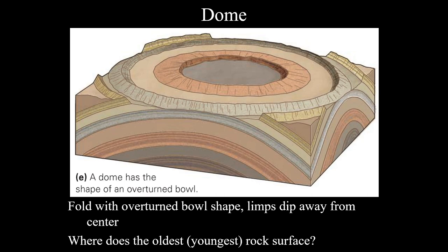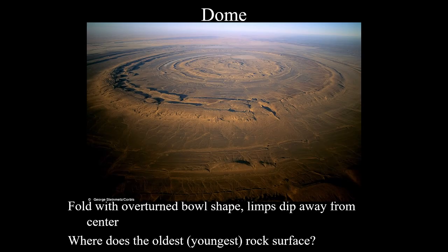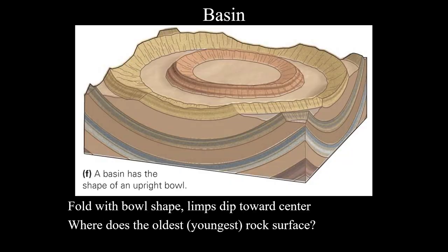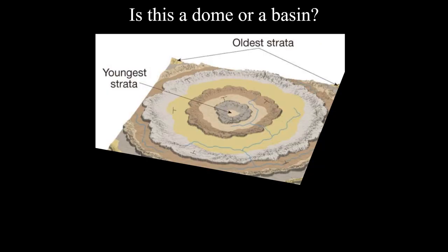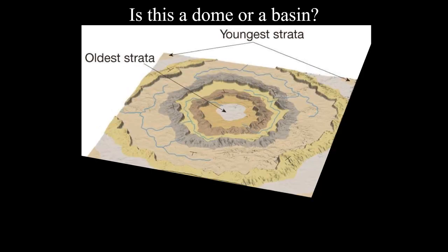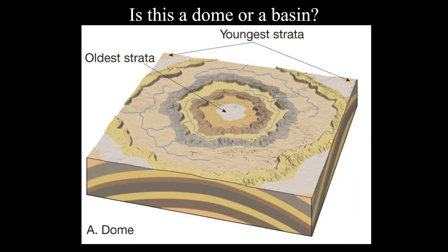We can also have not just linear fold features but three-dimensional features like domes and basins. A dome is an anticline in every direction — oldest rocks in the middle, youngest rocks on the outside. A basin is a syncline in three dimensions — youngest rocks in the center, progressively older going outward. On a two-dimensional map, if the youngest rocks are in the middle and oldest on the outside, that's a basin; if the oldest are in the middle and youngest outside, that's a dome.